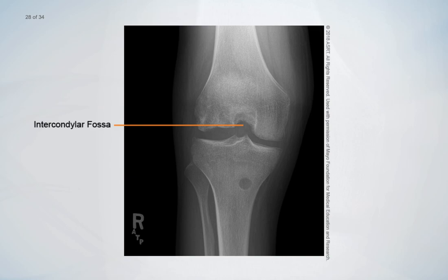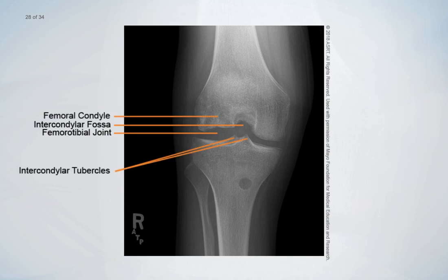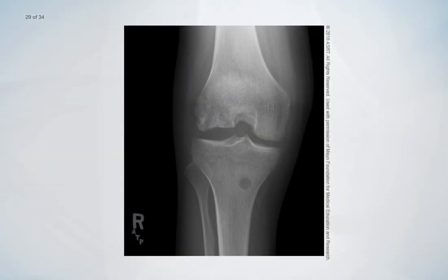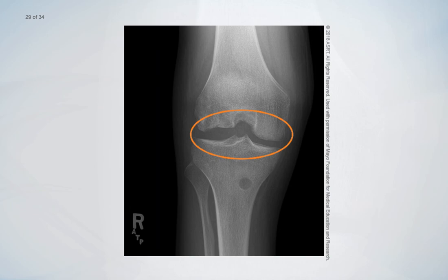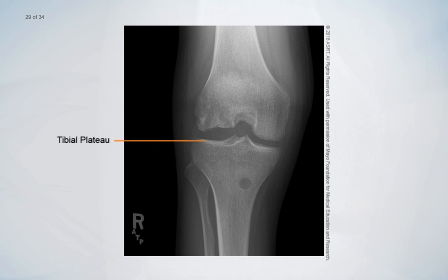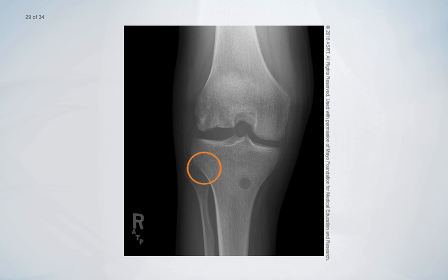Axial projections will show the intercondylar fossa, the femoral tibial joint space, and the posterior inferior articular surfaces of the femoral condyles. The intercondylar tubercles of the intercondylar eminence and the tibial plateaus are also visualized. The quality criteria for a radiograph of the intercondylar fossa include: collimation does not obscure relevant anatomy; the intercondylar fossa is seen without superimposition by the patellar apex; the intercondylar fossa and the knee joint are open; the posterior inferior articular surfaces of the medial and lateral femoral condyles are well visualized; one or both tibial plateaus are seen in profile with the anterior and posterior surfaces superimposed; the intercondylar eminence is centered and there is slight overlap of the proximal tibia and fibula indicating the knee is not rotated; and the image includes all soft tissue and adequately demonstrates bony detail.